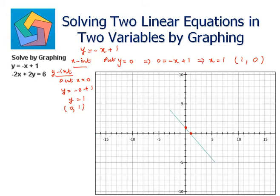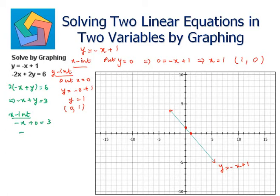This is the graph of the line y is equal to negative x plus 1. Now let's find the intercepts of the other line: negative 2x plus 2y is equal to 6. Taking 2 as common: negative x plus y is equal to 3. For the x-intercept, put y as 0: negative x equals 3, so x is negative 3 — giving us (−3, 0). For the y-intercept, put x as 0: y is 3, so (0, 3) is the y-intercept. Joining these two points together forms the second line.